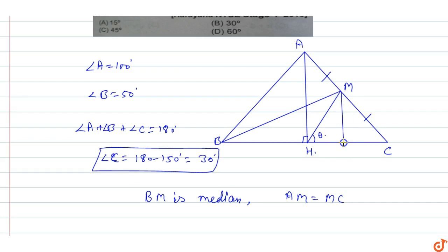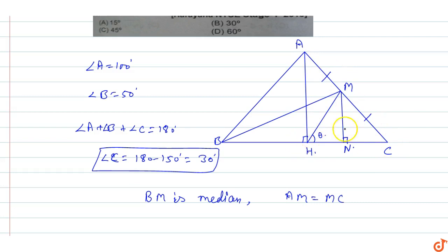Now drop a perpendicular from M to HC, adding point N. Triangle AHC and triangle MNC — both are similar triangles, because AH is perpendicular to BC, and MN is perpendicular, giving us two pairs of equal angles.